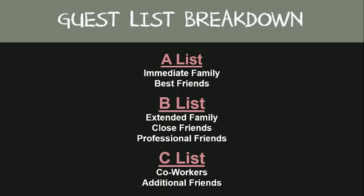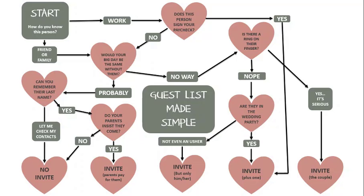Not everyone from your A-list is going to be able to make it. So when you're getting ready to send out your invites, make sure everyone on the A-list is invited, and if there are any additional invites available, move on to the B-list and choose your most important guests from there, and so on. If you're still having trouble narrowing down your B-list, you can use this quick etiquette flowchart to help you make those choices when it comes to family, friends, and co-workers.